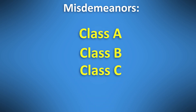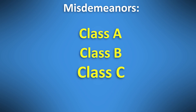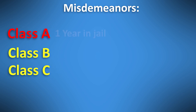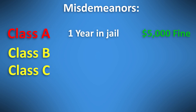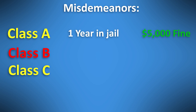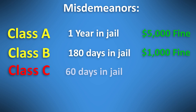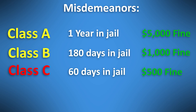Before we start, let's clarify what's meant by a Class A, Class B, or Class C misdemeanor. The most severe is Class A, with up to a year in jail and fines as high as $5,000. Class B has a fine up to $1,000 and up to 180 days in jail. Class C is the most common, with up to 60 days in jail and no more than a $500 fine.